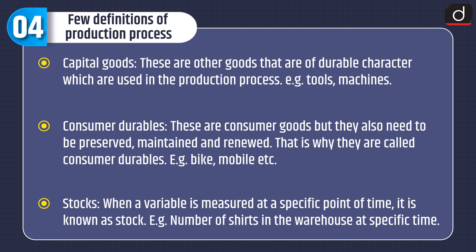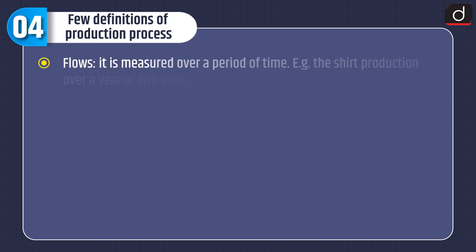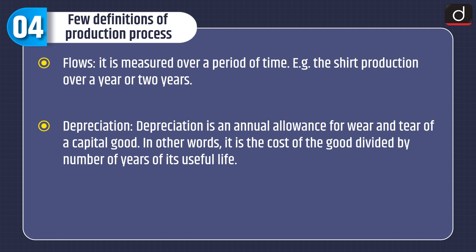Stocks — when a variable is measured at a specific point of time, it is known as a stock; for example, number of shirts in the warehouse at a specific time. Flows — it is measured over a period of time; for example, the shirt production over a year or say two years. And depreciation — it is an annual allowance for wear and tear of a capital good. In other words, it is the cost of the good divided by the number of years of its useful life.